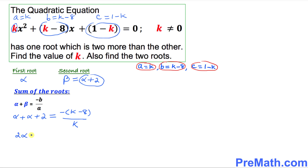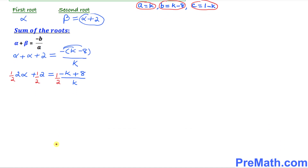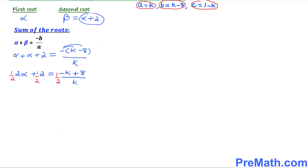So we have 2α + 2 = −(K − 8)/K, which equals (−K + 8)/K. Since the left-hand side terms are divisible by two, I'm going to multiply across the board by one-half. This cancels out the 2, giving us alpha + 1 = (8 − K)/(2K).